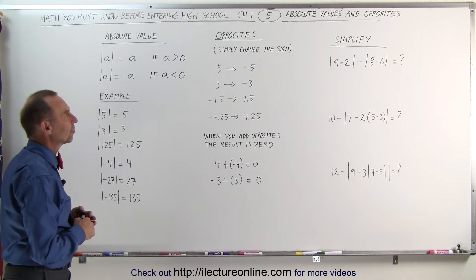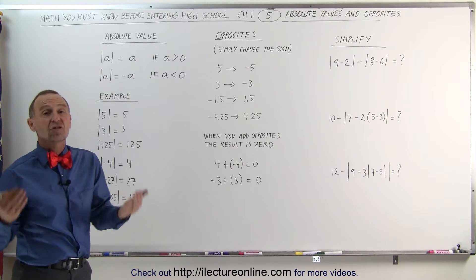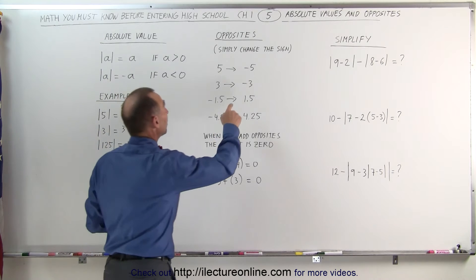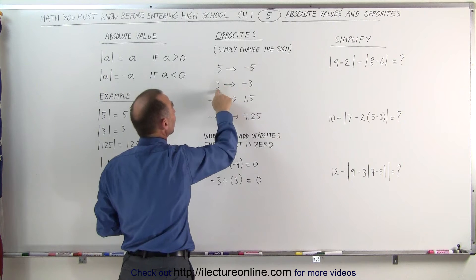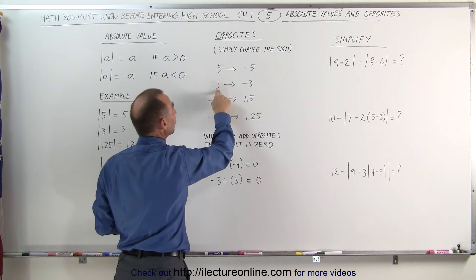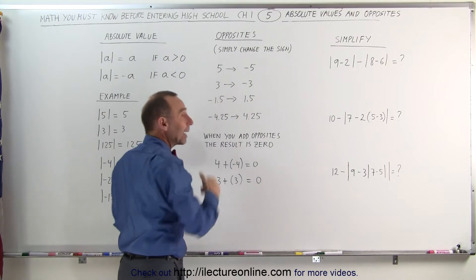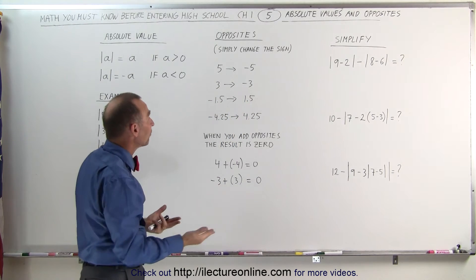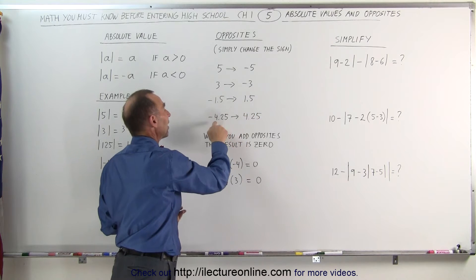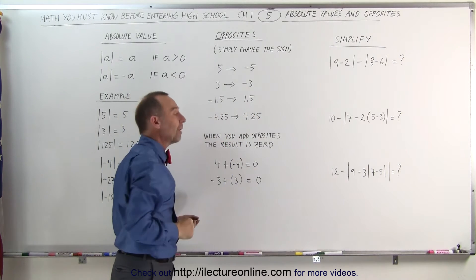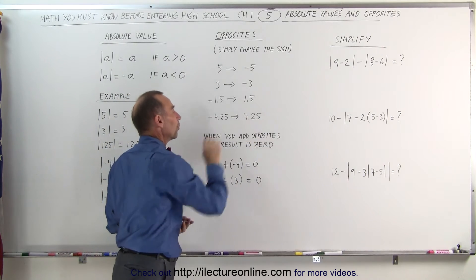What about opposites? When you find the opposite of a number, you simply change the sign. For example, if you have 5 and you want to find the opposite of 5, that's negative 5. If you have the number 3, the opposite is negative 3. And if you have a negative number like negative 1.5, the opposite is positive 1.5. If you have negative 4.25, the opposite is positive 4.25.